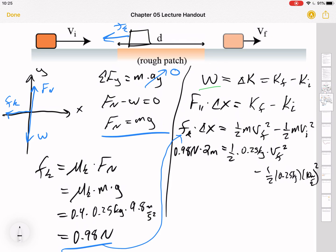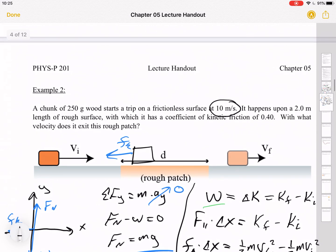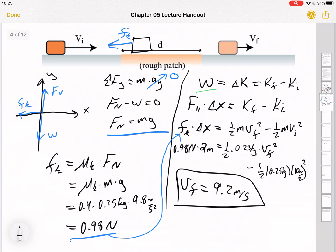So 2 times 0.98, it's going to be pretty close to 2. I want to say 1.99 or something. Add over this term. Divide by the half and the 0.25. What I get when I do this math, because I got a square root, what I get when I do this math is 9.2 meters per second.